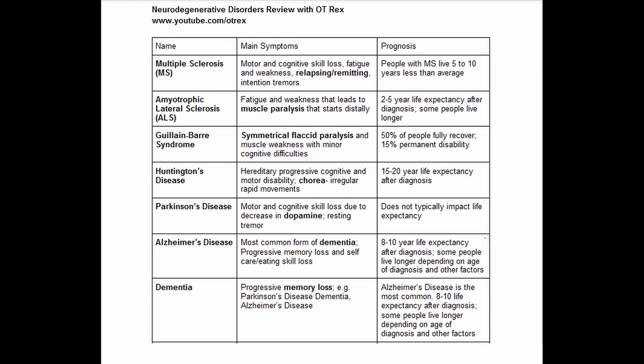Huntington's disease is hereditary — and I put that in there because not all of these are; it's actually just this one on the list. So H for Huntington's and H for hereditary. This condition involves progressive loss from both a cognitive and motor standpoint. I bolded chorea because of the irregular rapid movements that are unique to Huntington's disease. Prognosis is 15 to 20 years of life expectancy after diagnosis.